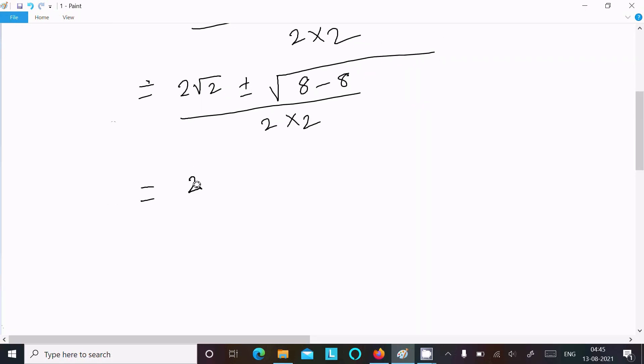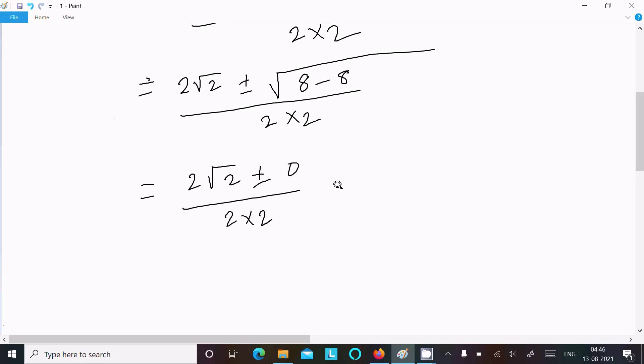This here 2√2, so this here plus minus 0, so this here plus minus 0 over 2, or we can write.